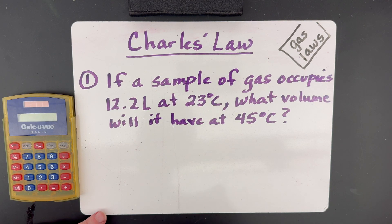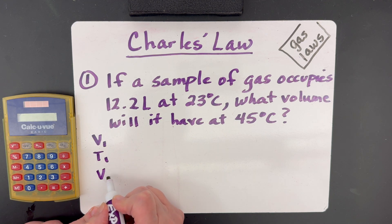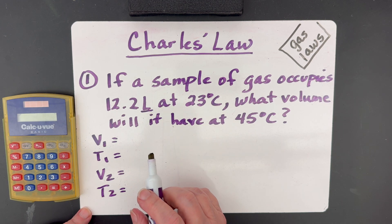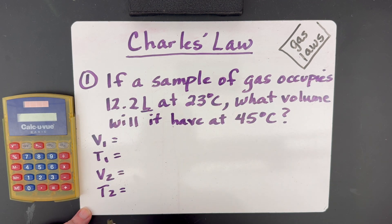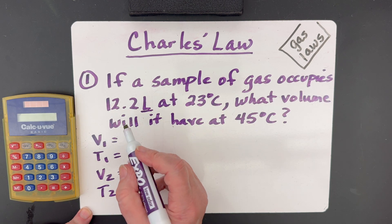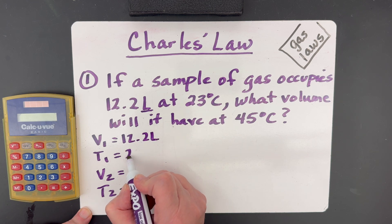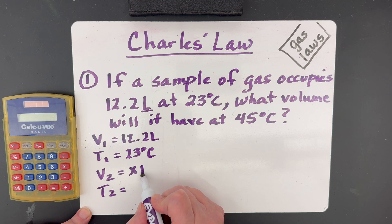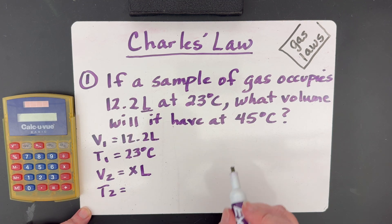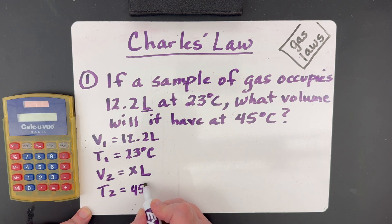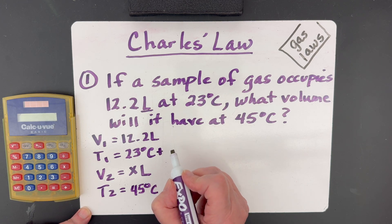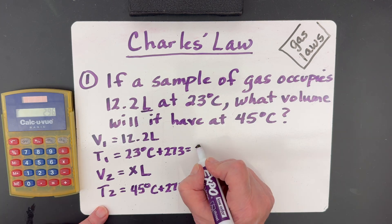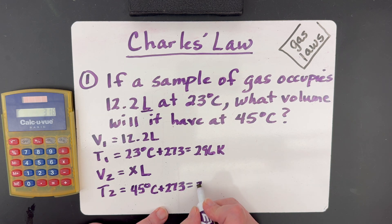The first thing we need to do is pull out all of our variables. So we know there's going to be a V1, T1, V2, and T2. Remember that liters or milliliters are going to be volume. So it's saying the gas occupies 12.2 liters at 23 degrees Celsius. So those two conditions go together. So we're going to have 12.2 liters at 23 degrees Celsius. What volume will it have? So this is our X. It's going to come out in liters because we were given liters for our other volume. And what volume will it have at 45 degrees Celsius? So remember, first thing you need to do before anything else is add 273 to your temperatures to make them into kelvins. 296 Kelvin, 318 Kelvin.